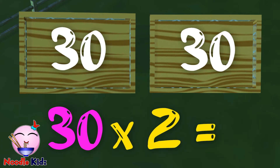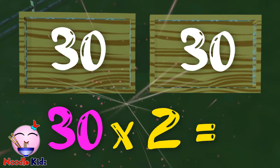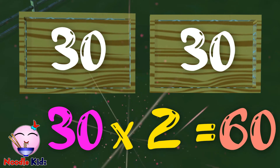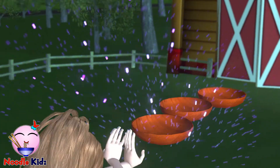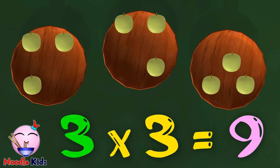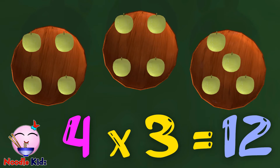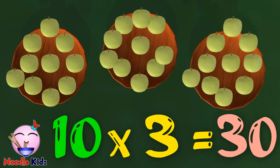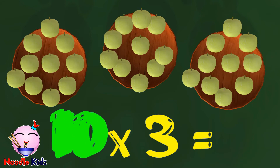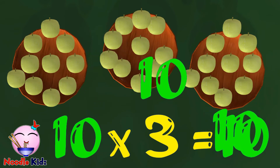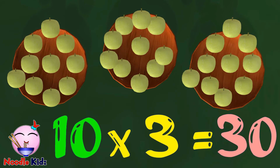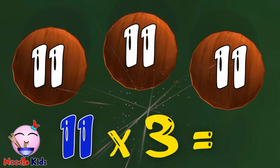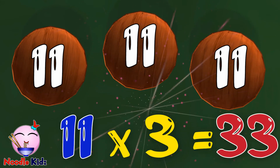What about thirty times two? Yes, the answer is sixty. Three times three is nine. Four times three is twelve. Five times three is fifteen. Ten times three is thirty. Add the same number three times — that's what times three means. So what about eleven times three? Yes, the answer is thirty-three.